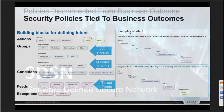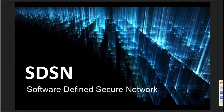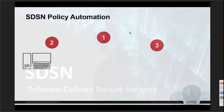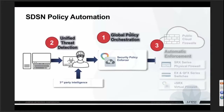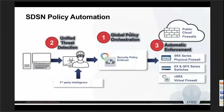With these three building blocks in place, let's look at the solution. SDSN — Juniper's Software-Defined Secure Networks — involves lots of automation. There are three components in the policy orchestration piece. The central part is where natural language-based policies are created and where software ties the other pieces together. On the left-hand side is the threat detection piece, where various methods of threat detection and identification are done, and that feed is given to the policy enforcer.